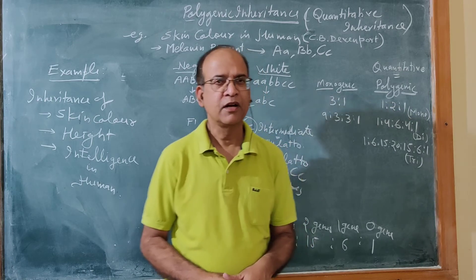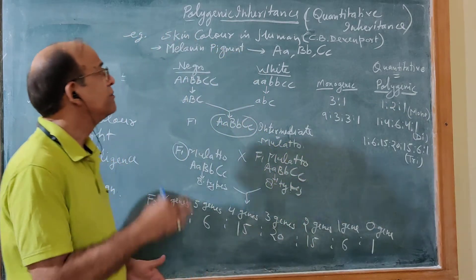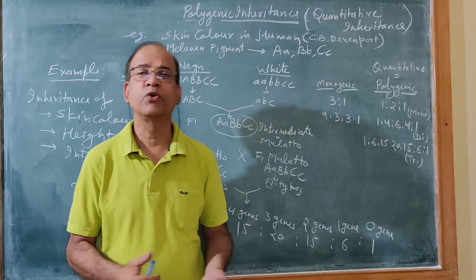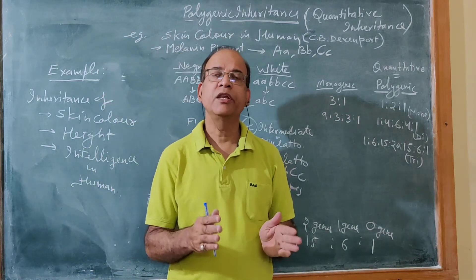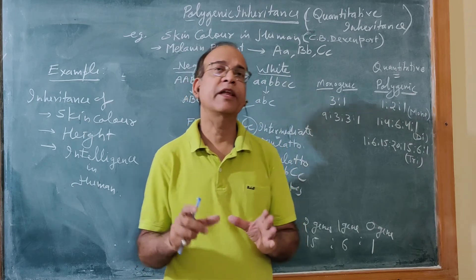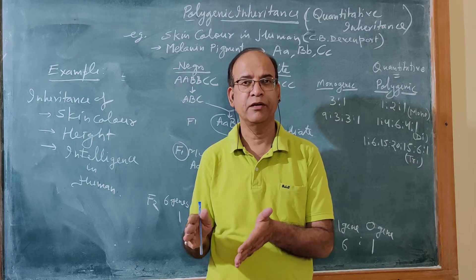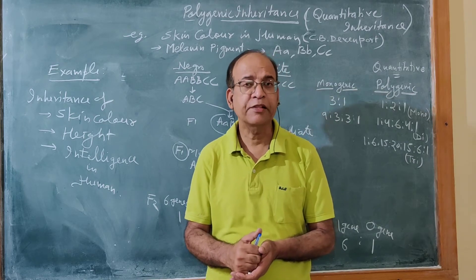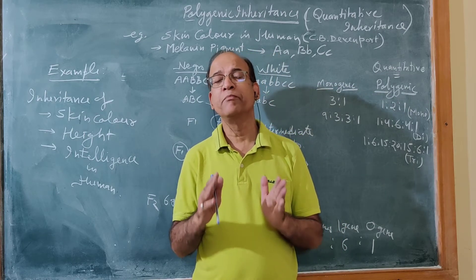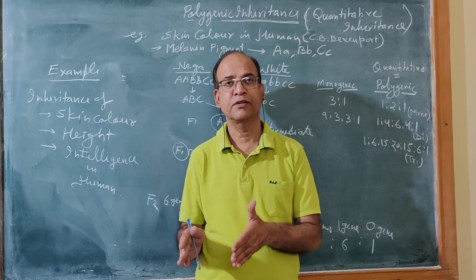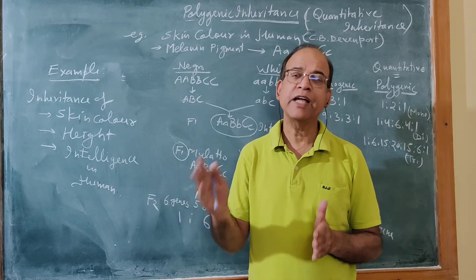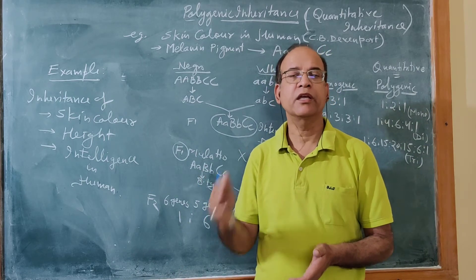Hello viewers, today we will discuss polygenic inheritance or quantitative inheritance. Generally, one gene is responsible for the inheritance of one character — one character is decided by one gene. But there is an exception to this rule, where one character is decided by more than one gene. That situation is called polygenic inheritance.